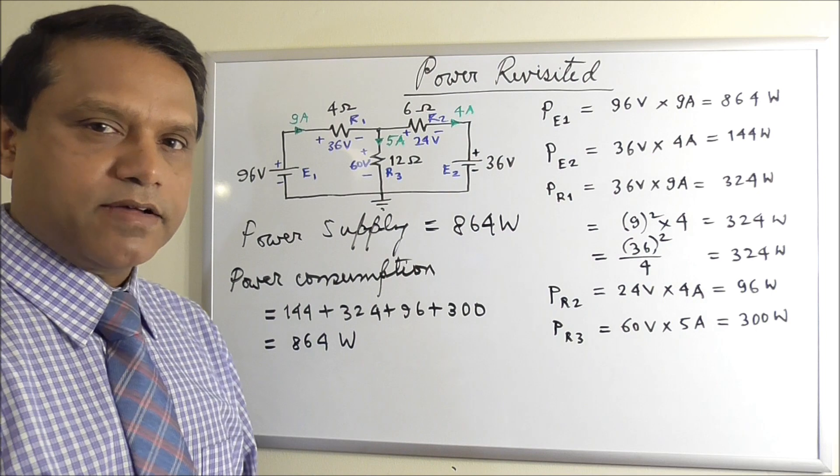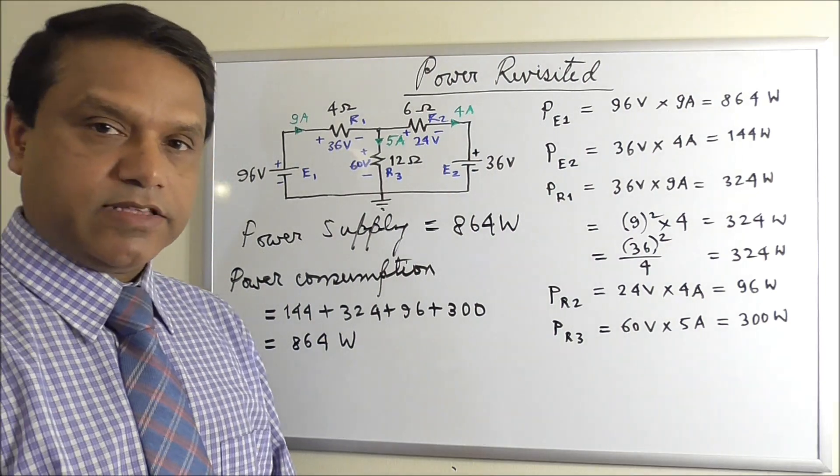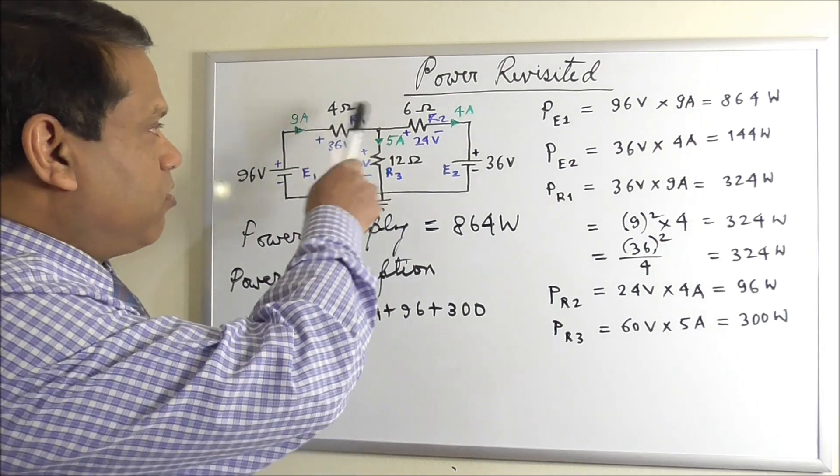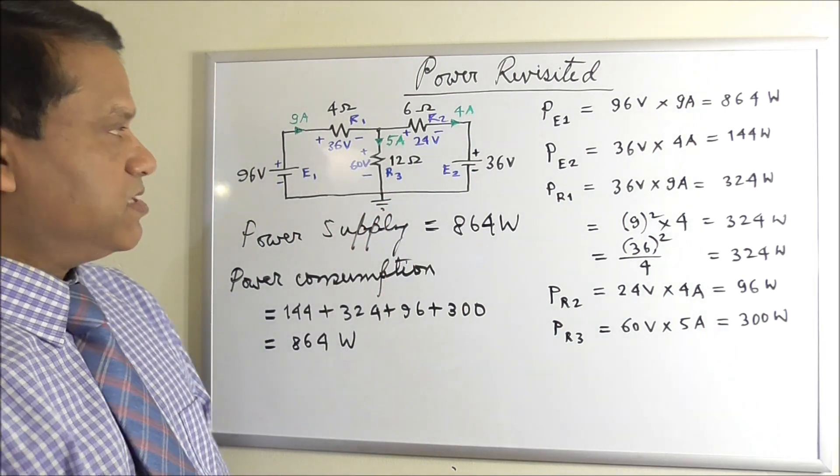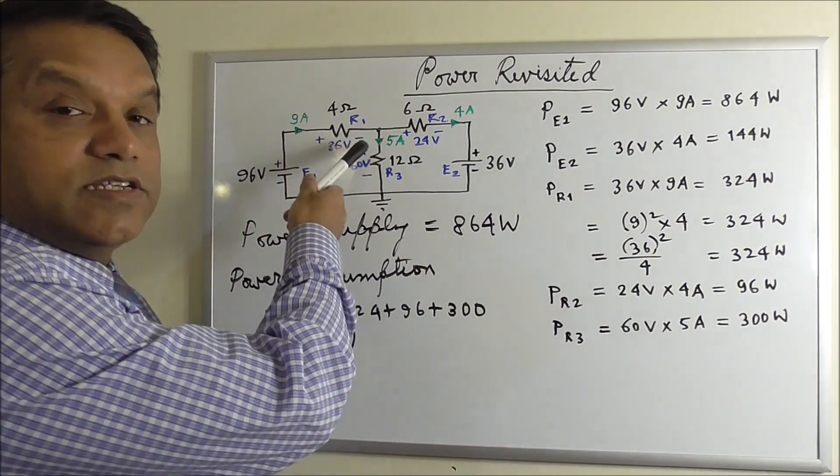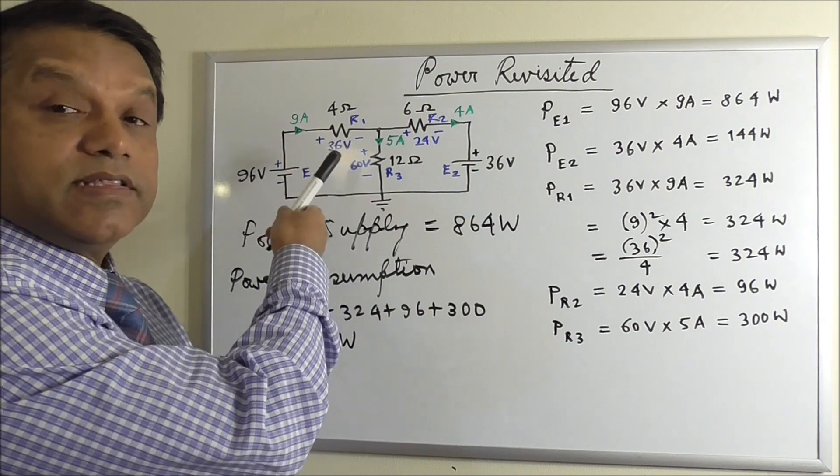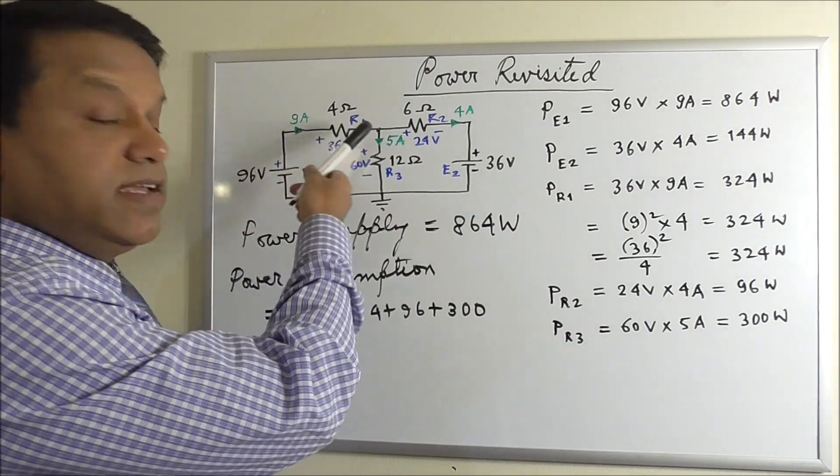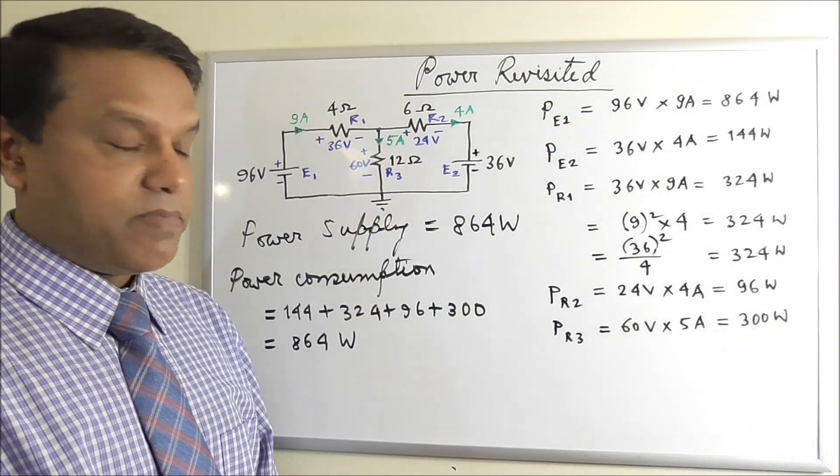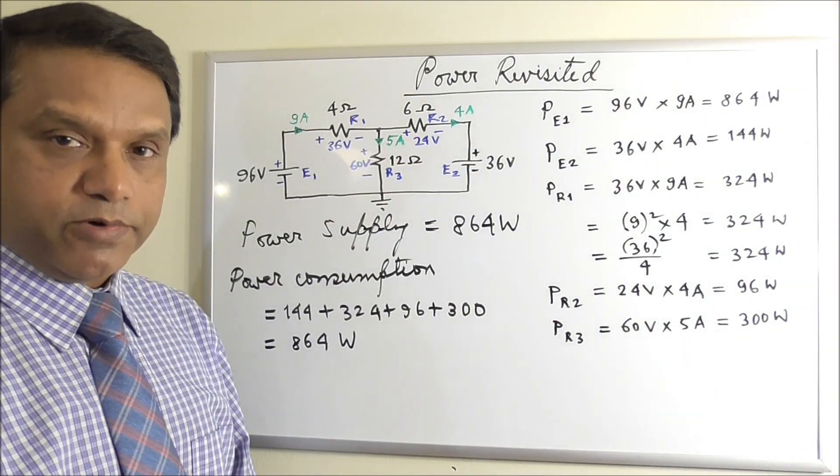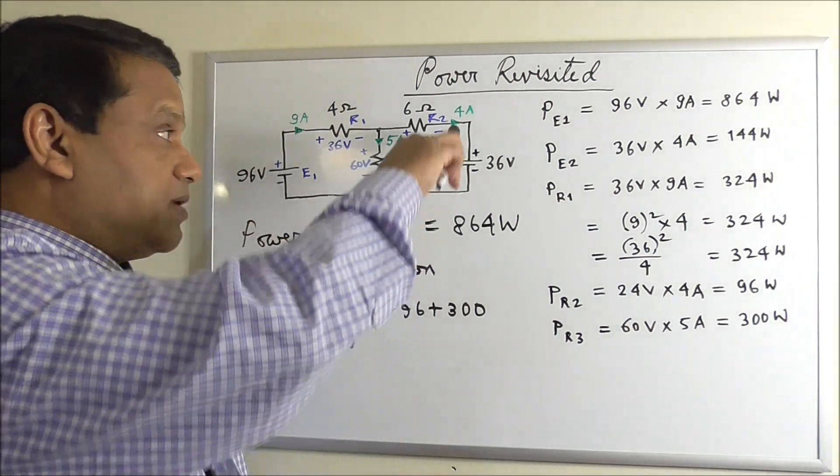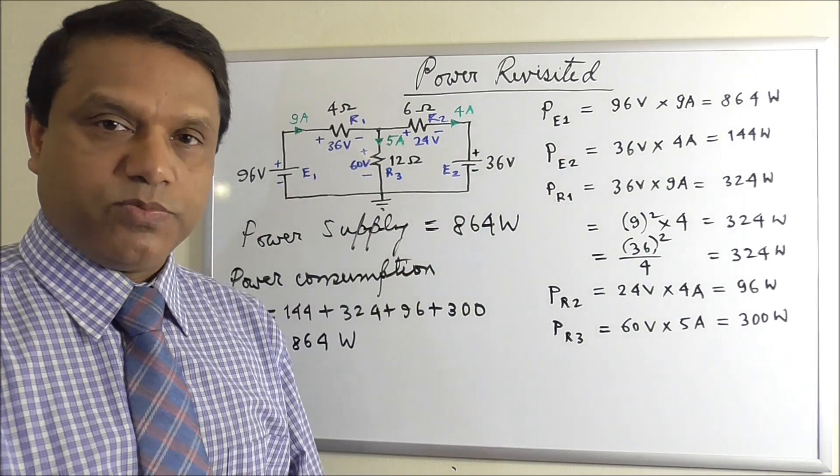So we have revisited the concept of power in an electrical circuit. The important thing to note here, resistors will always consume power. So that means always current will flow from higher voltage side to lower voltage side. That means there will be voltage drop in the direction of the current. That is here, here, and here. But for power supplies, it could be either way. If the current comes out of the higher voltage side, it's supplying power. If the current comes out of the lower voltage side, it is consuming power.